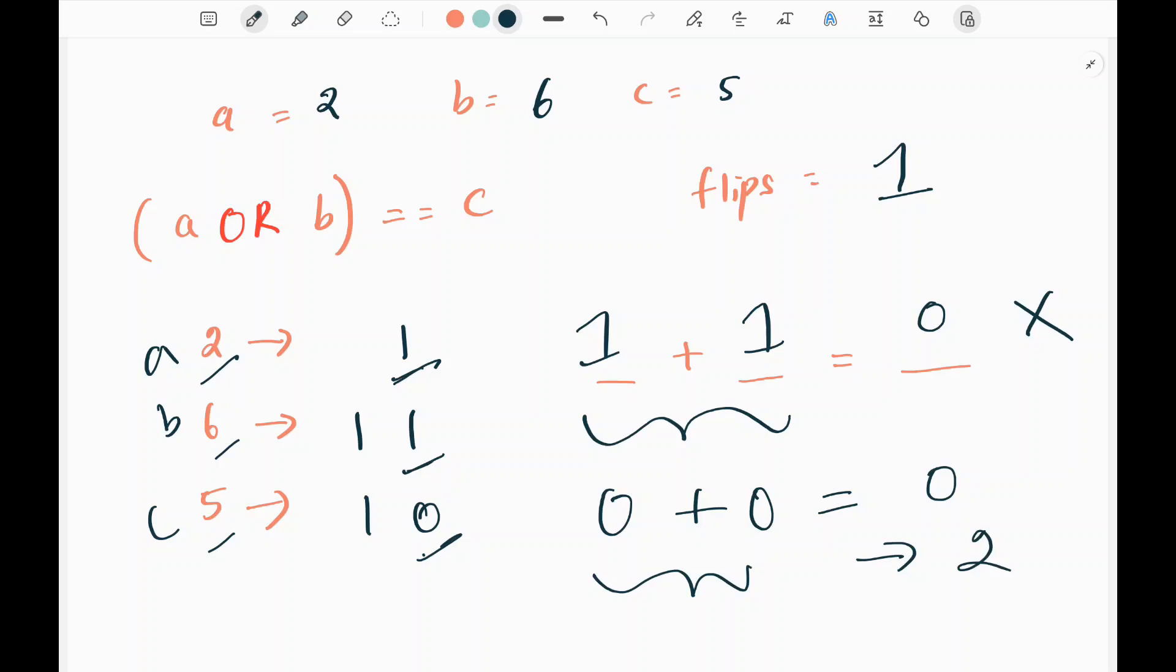So here if I flip only one time either a or b I will be getting 1 which is not a valid equation here. So I am in a situation where I need to flip 2 times. So I will flip both a and b. So the minimum flips I can make in this iteration is 2. So I will add 2 to the flips. So now the flips becomes 3.